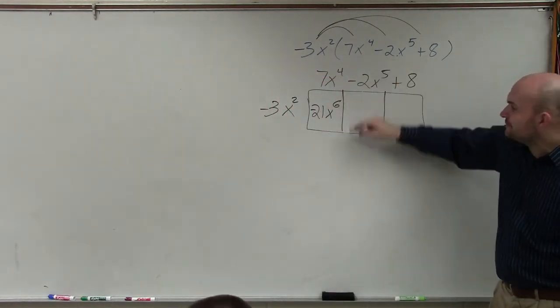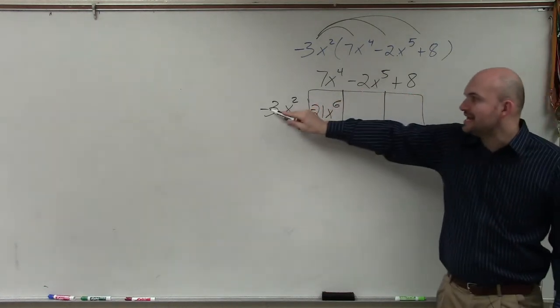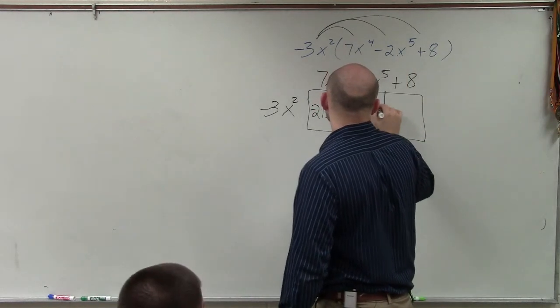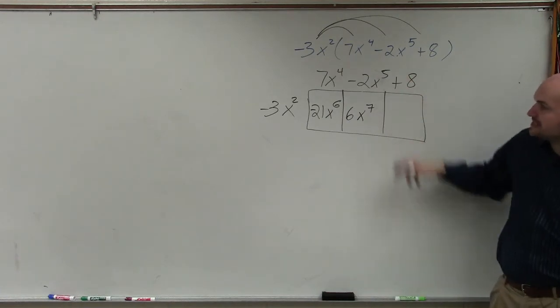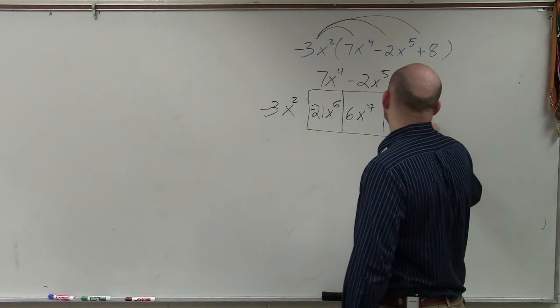Now, let's find the area of this box. This box has a length of negative 2x to the fifth and negative 3x squared. So my final answer would be positive 6x to the seventh. And then over here, this length is 8, and the height here is negative 3x squared. So I have a negative 24x squared.